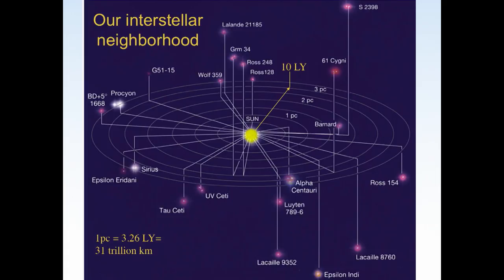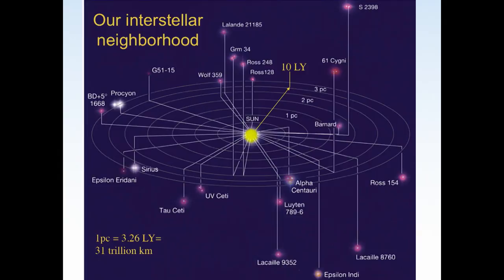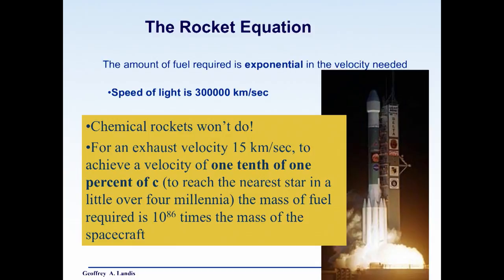But the good news is there's a lot of stuff out there that we want to go visit. Here's our interstellar neighborhood. We've been talking about trips to Alpha Centauri, but there's a lot of stuff out there within about three parsecs of the sun. There's a big neighborhood just in our tiny neighborhood near the sun. Unfortunately, rockets just don't do it. You should know this already. But the amount of fuel you need is exponential in the velocity you need. To go this 130 million million kilometers, you need to go pretty fast. So for an exhaust velocity, you even get a tenth of one percent of c, you would need a mass of fuel 10 to the 86th times the mass of the spacecraft. That's not even within the realm of speculative fiction.